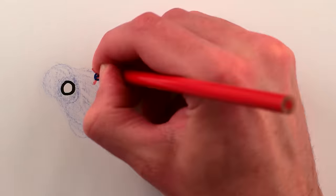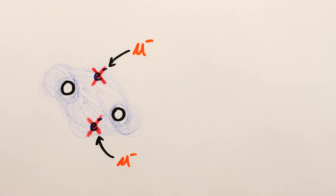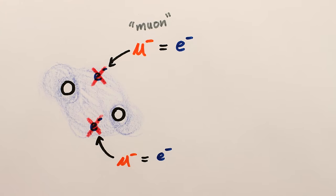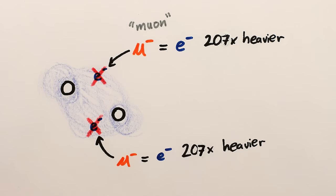However, things are different if you replace the electrons with particles called muons, which are basically exactly the same as electrons, except 200 times heavier.